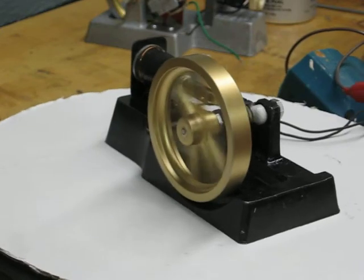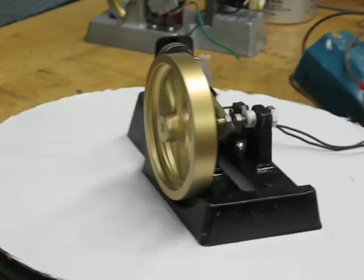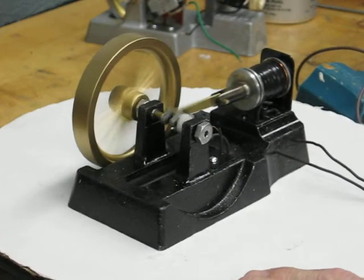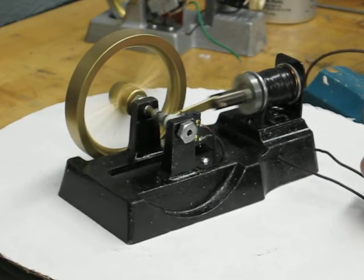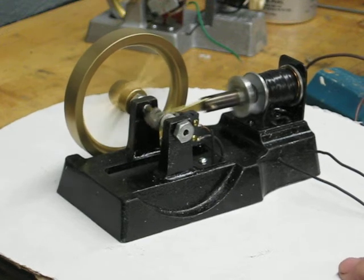The hardest part of this was building that little crankshaft. The magnet is wound with 24 gauge wire, probably about 100 feet.